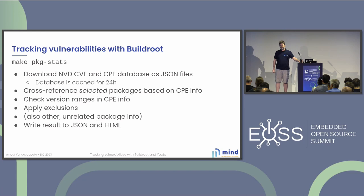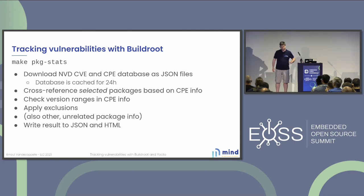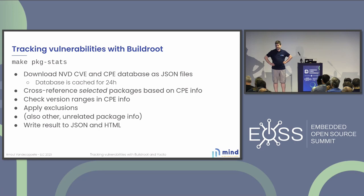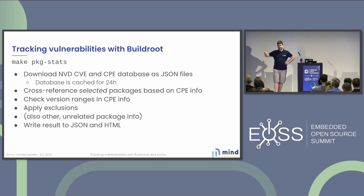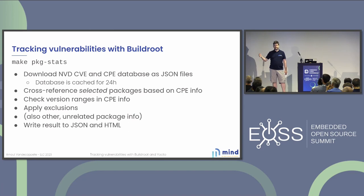Let's take a look at how it actually works in BuildRoot. The command to track vulnerabilities is called make package-stats. The reason it's called that is a bit historical — there was a package-stats command already, and CVE tracking was easily added there. What does this command do? It doesn't actually do it in make — it calls a Python helper to do the actual heavy lifting. It will download the CVE and CPE database as JSON files and cache those to disk for 24 hours, because downloading all of that takes a couple of minutes.